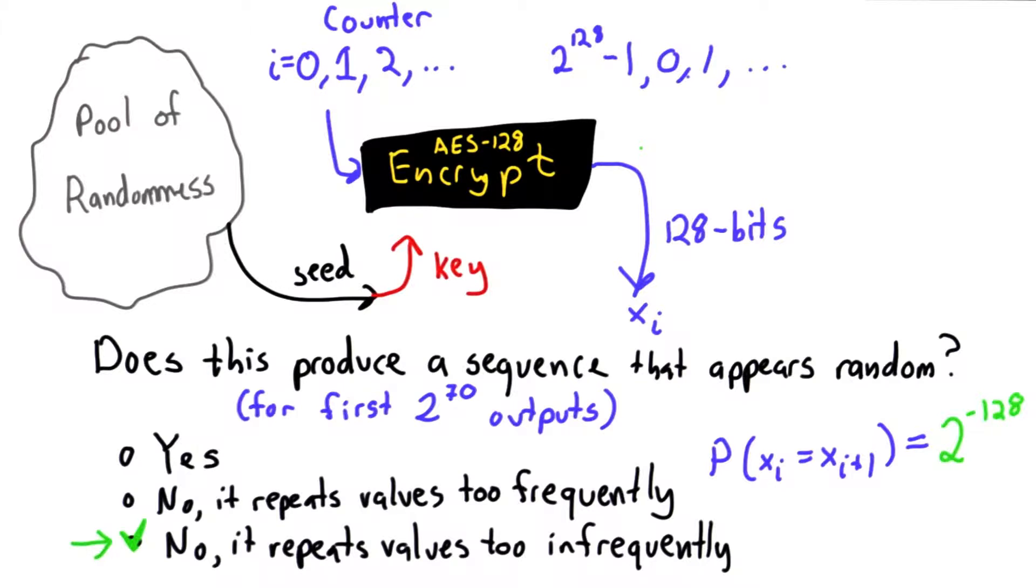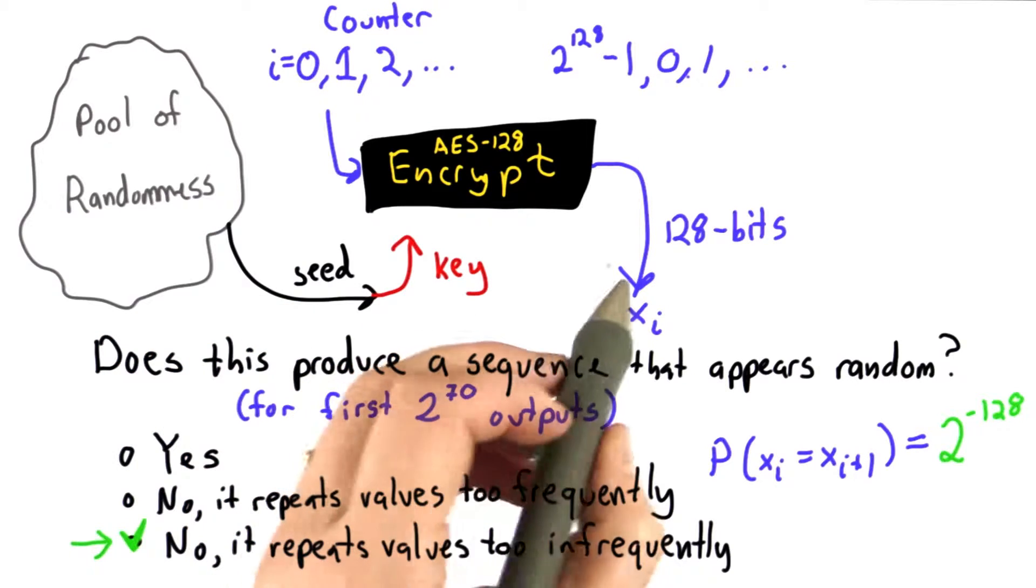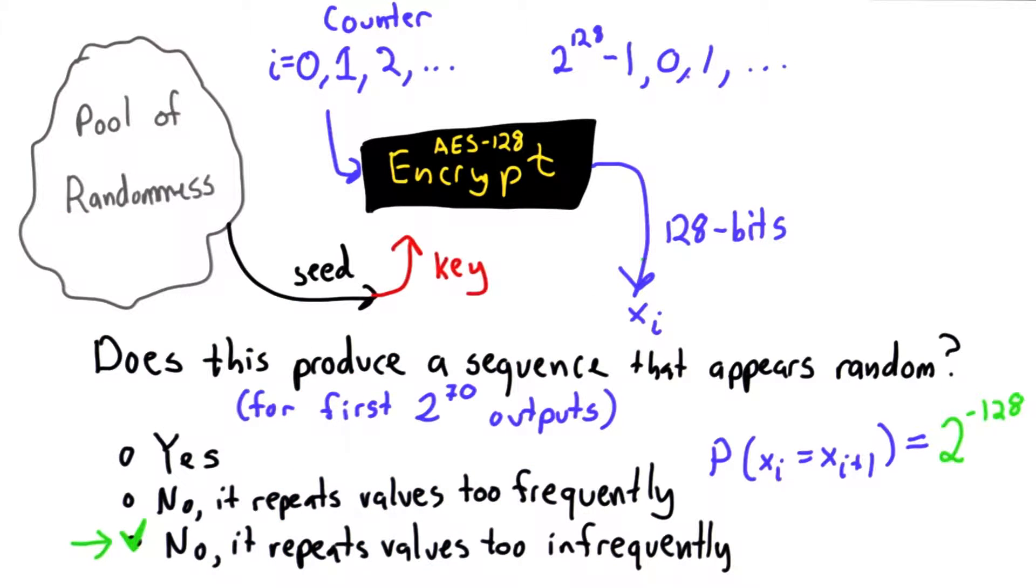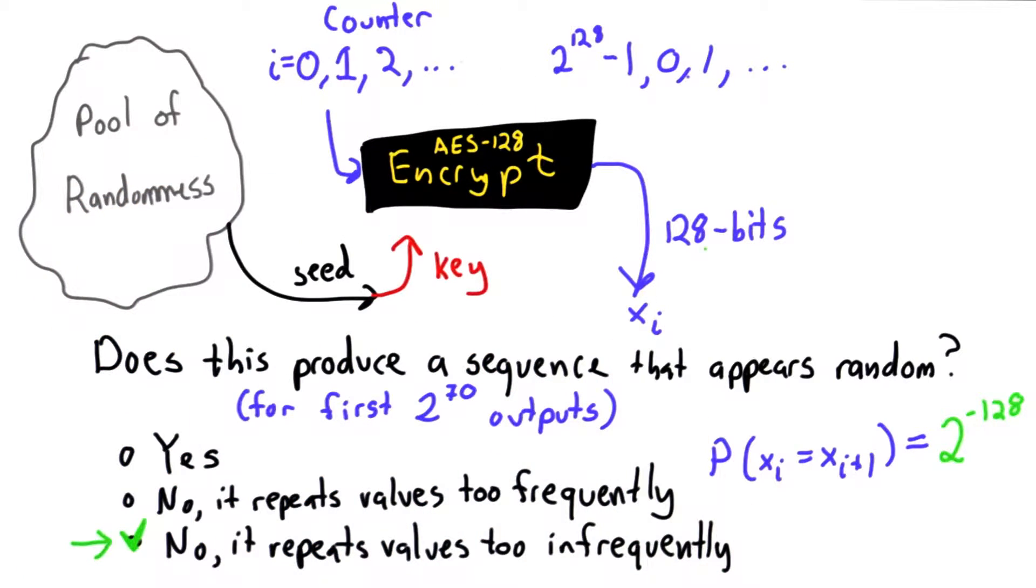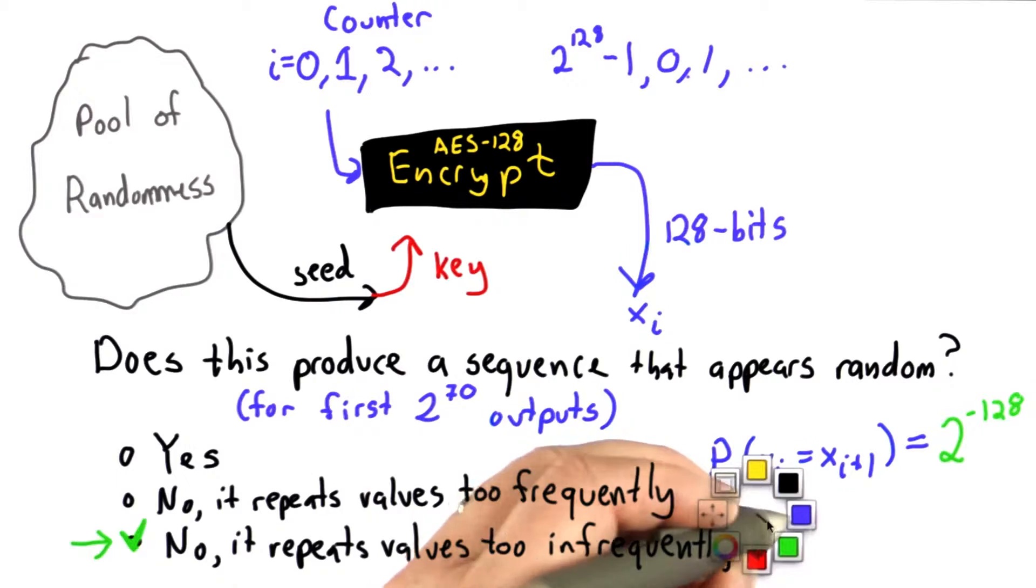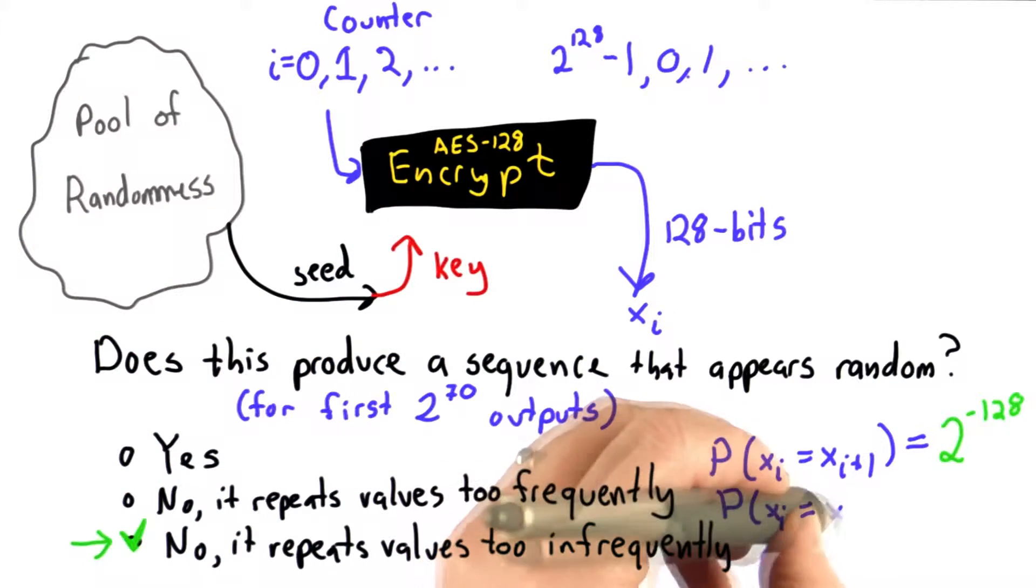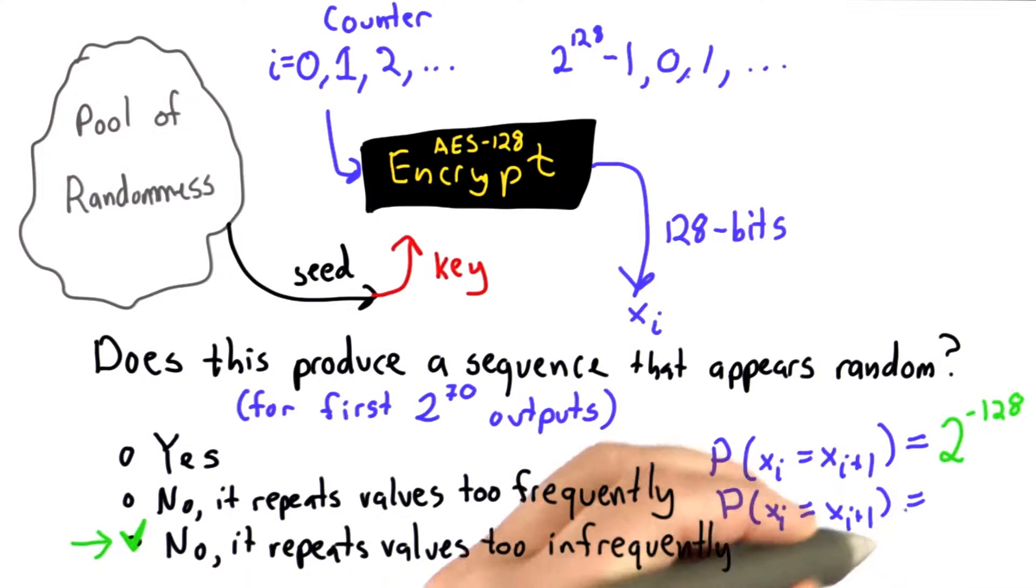If this is an encryption cipher, well, it satisfies the property of invertibility. Any value that's different here encrypts to a different value. That would mean that for our actual pseudo-random number generator, this probability is actually equal to 0, and that's different from what it would be in a real random sequence.